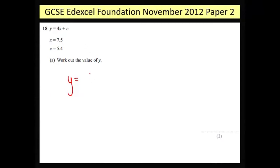x is 7.5 so we need to do 4 lots of 7.5, and then we need to add c, but c is 5.4, so add 5.4. You type all of that into your calculator and it will give you the answer 35.4. So the answer is 35.4.